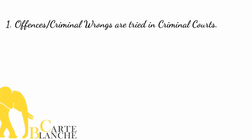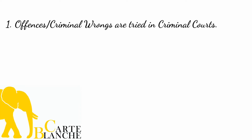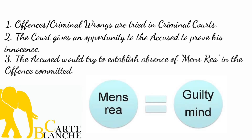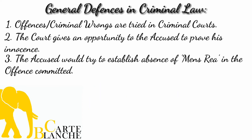A person who is accused of committing an offence is tried in a criminal court. The court, before declaring the person guilty, gives him an opportunity to establish the absence of intention or evil mind — in other words, the absence of mens rea. For that purpose, the accused can establish certain defences to get exemption from criminal liability. Such provisions available to any accused in order to go unpunished are called general defences or general exceptions.